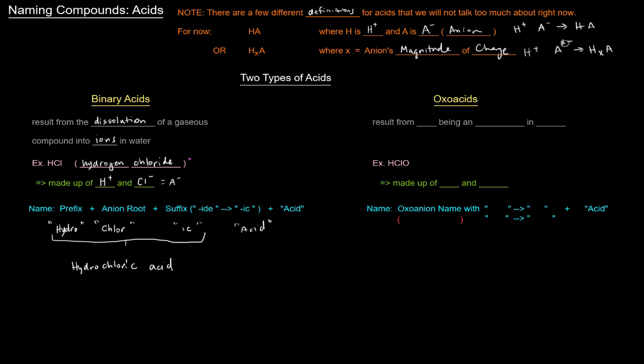So if we put this all together, this whole part here before acid is all going to be one word. So the name will be hydrochloric acid. The two separate words are hydrochloric and acid. So that's how you name binary acids. The prefix hydro, anion root, change ide to ic, and then add acid at the end. Now the other type, oxoacids, they result from the A- anion being an oxoanion in the HA. So an example would be HClO. That's made up of H+, and the oxy anion or oxoanion, ClO-, which is hypochlorite.